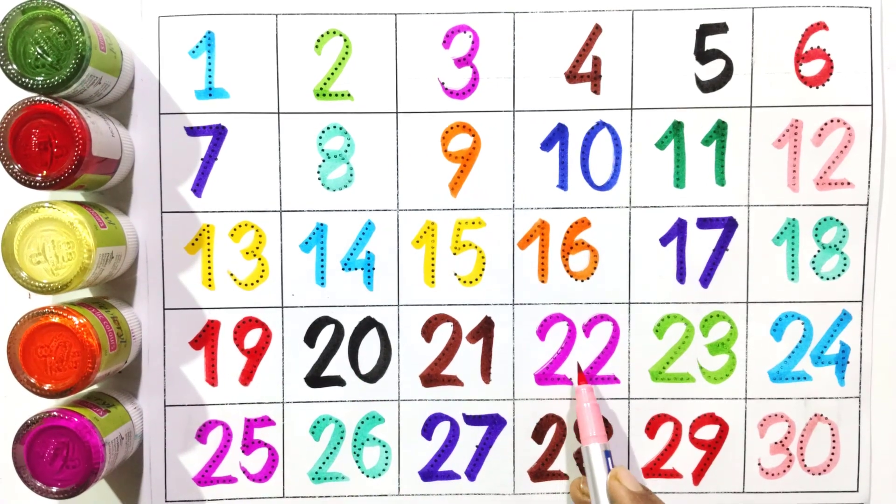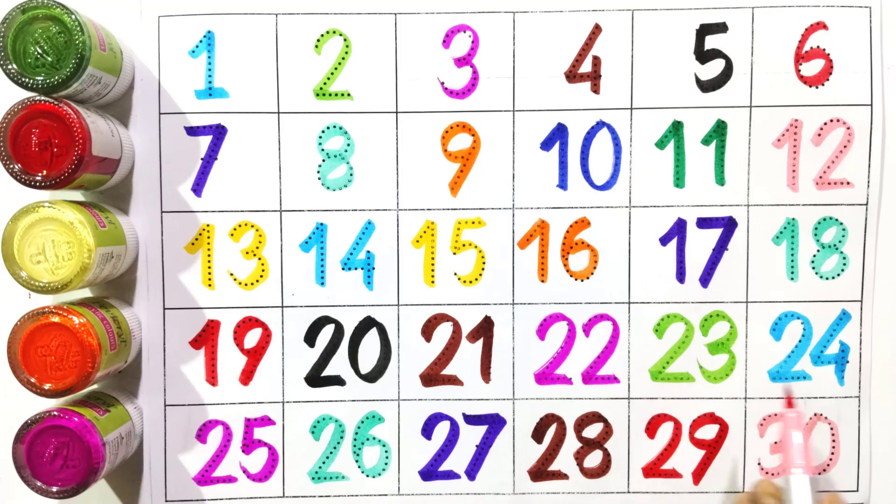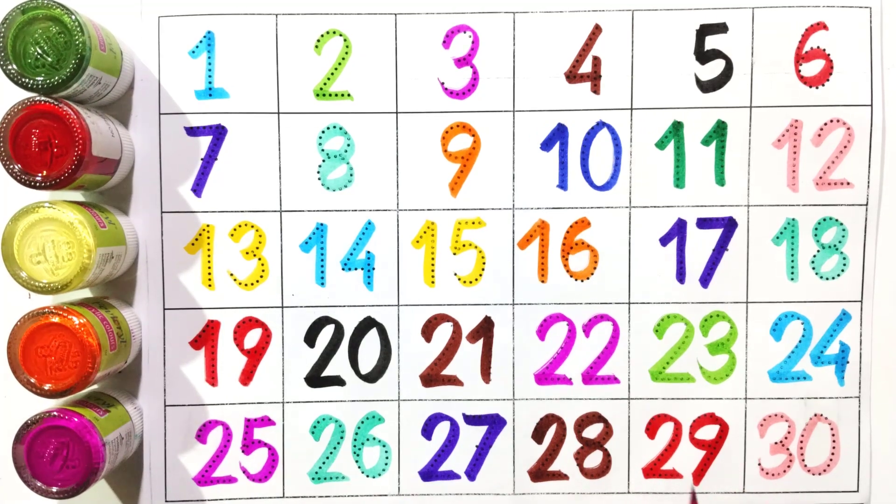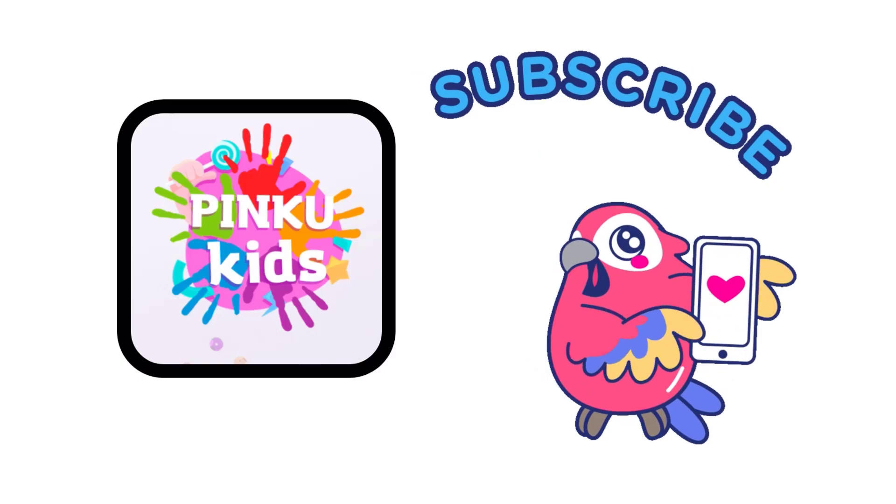Twenty-one, twenty-two, twenty-three, twenty-four, twenty-five, twenty-seven, twenty-eight, twenty-nine, thirty. Subscribe for more videos.